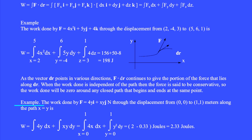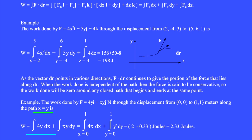A second example: the work done by vector F equals 4y i-hat plus xy j-hat newtons through the displacement from (0, 0) to (1, 1) meters along the path x equals y is found by integrating 4y dx plus the integral of xy dy. In this integration, variable y is equal to x, so the integrand 4y can be replaced with 4x. In the second integral, x is replaced with y, so we have an integral of y squared, and we get 2.33 joules.